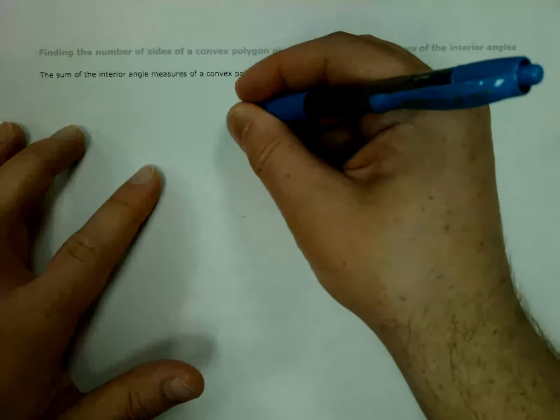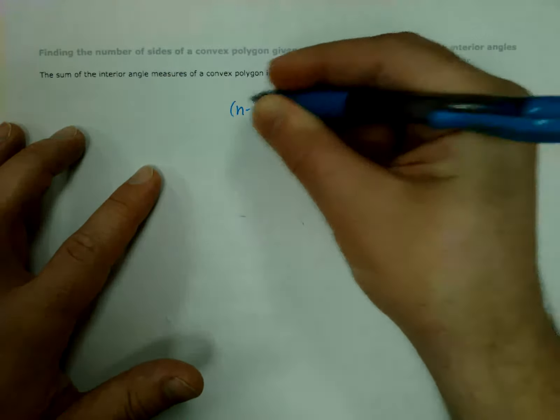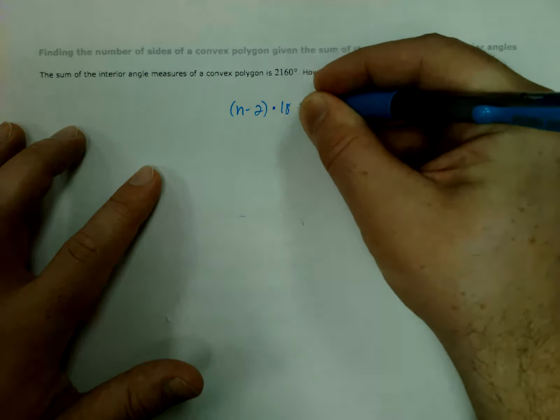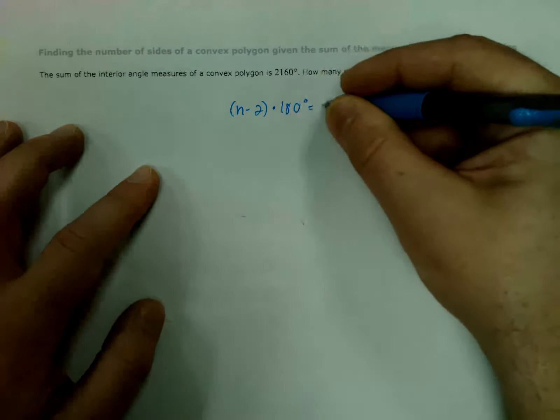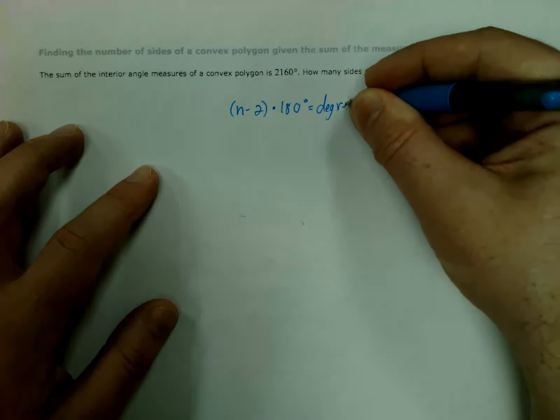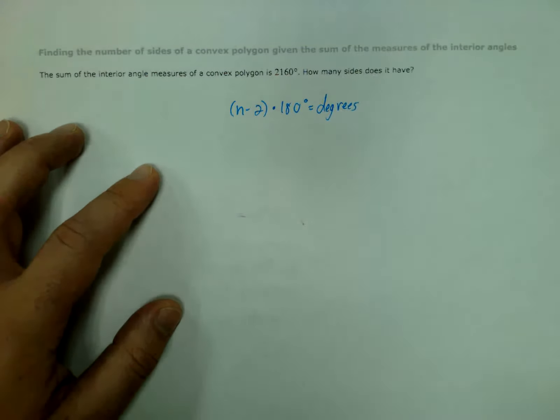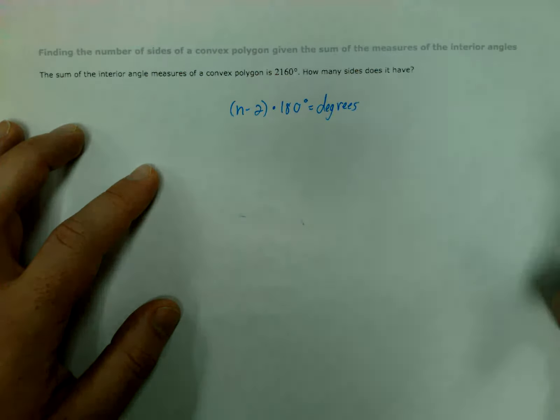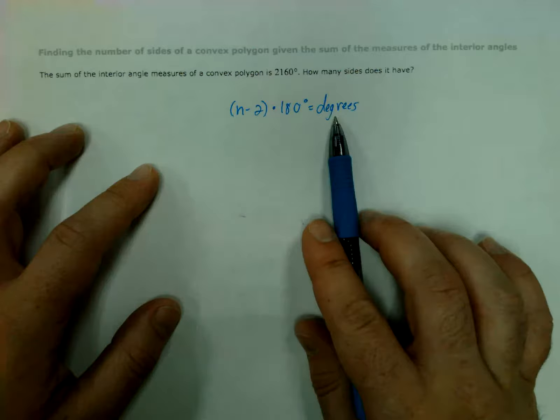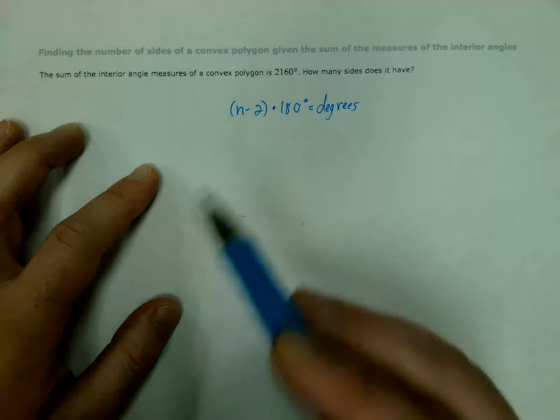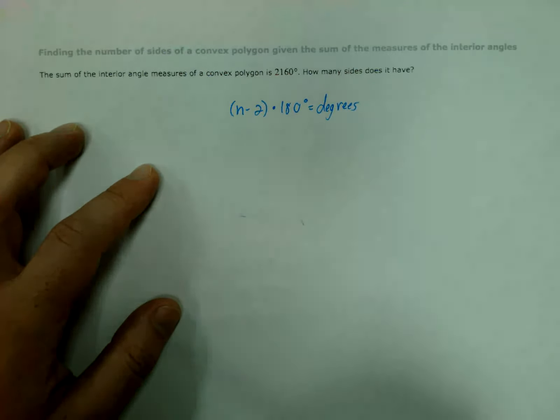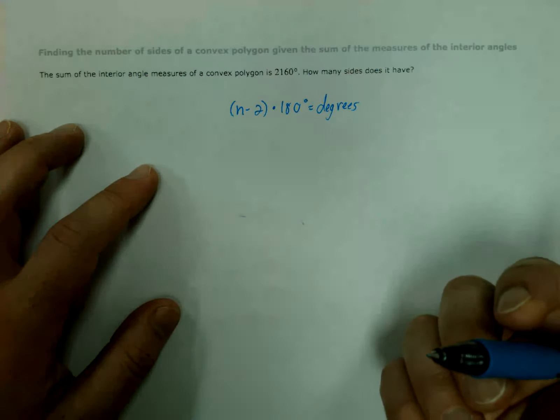We're going to use the same formula. So n minus 2, the number of sides minus 2 times 180 degrees equals the amount of our degrees. You'll sometimes see this with s as the number of degrees. I find that confusing, since it could stand for sides or sum or whatever, so I just write out the word degrees, and I think it's a little bit less confusing.